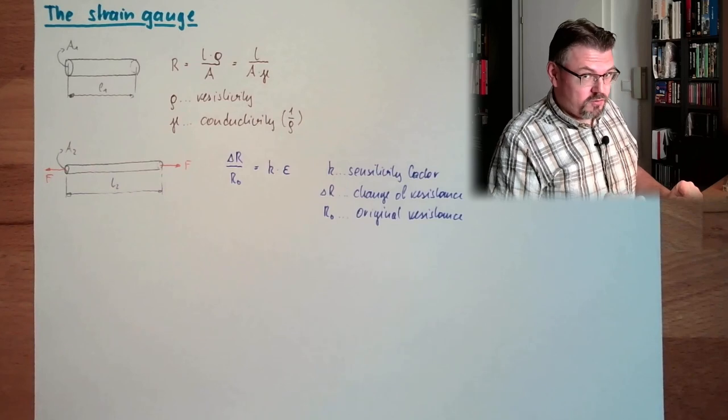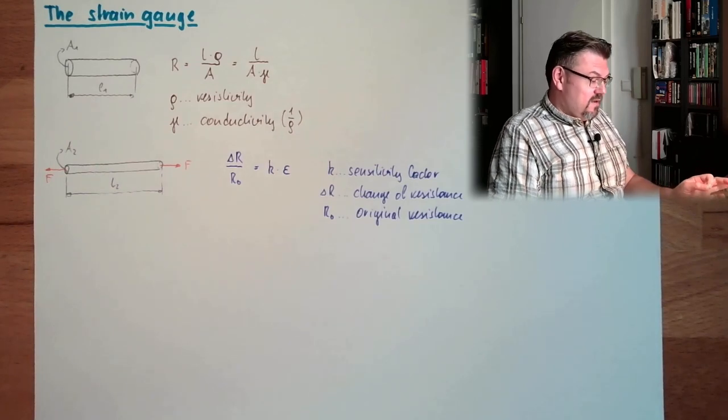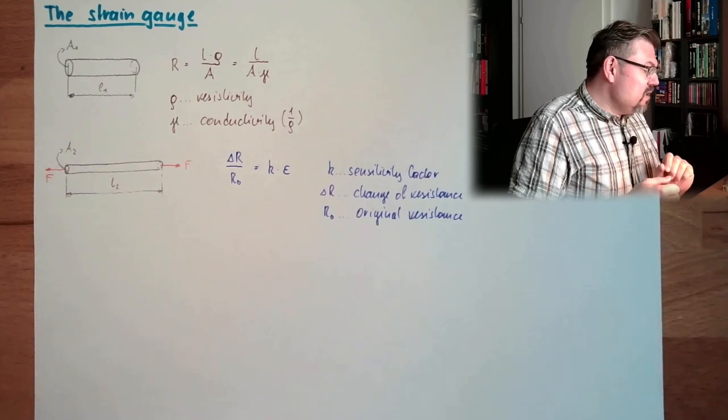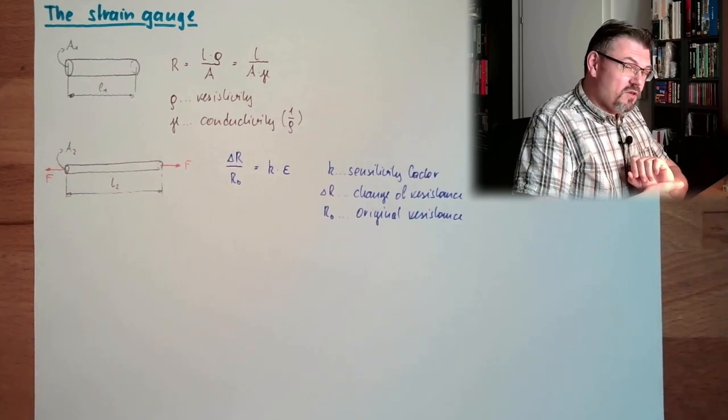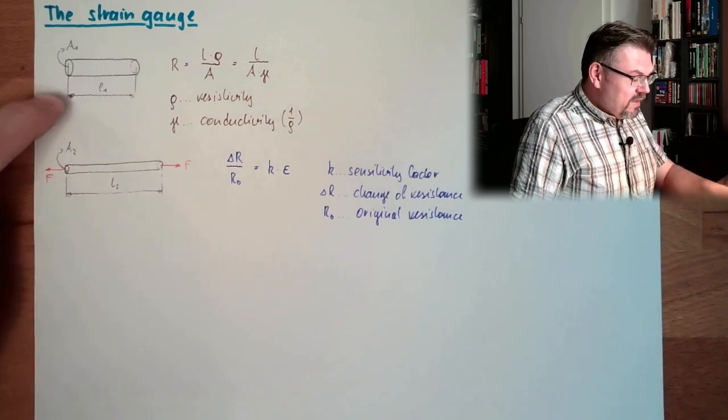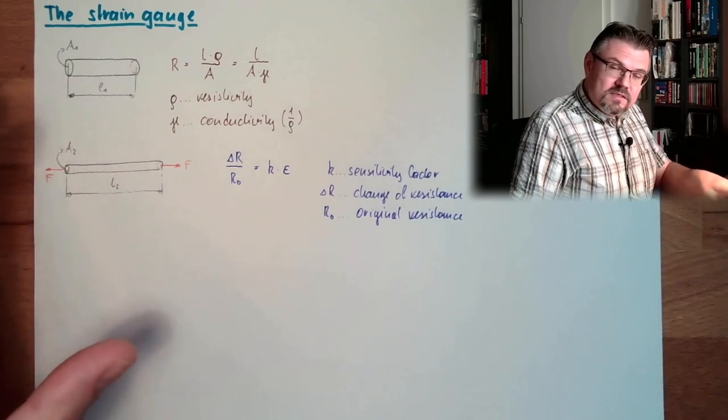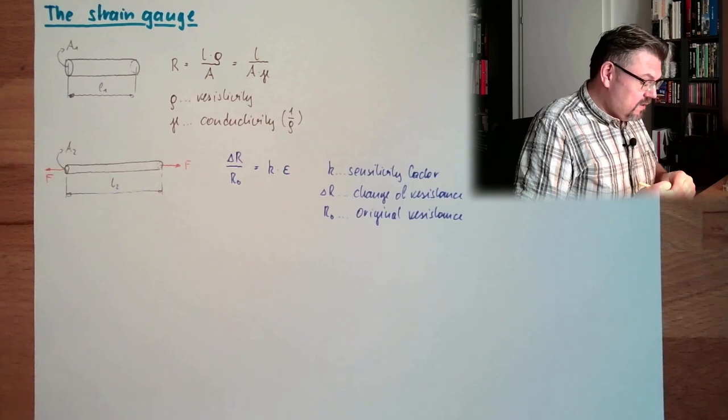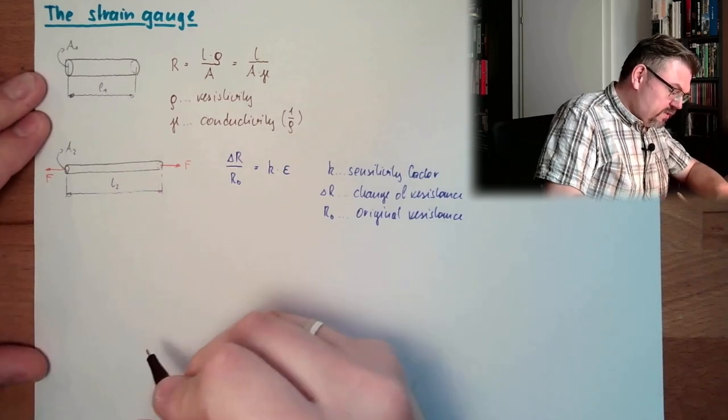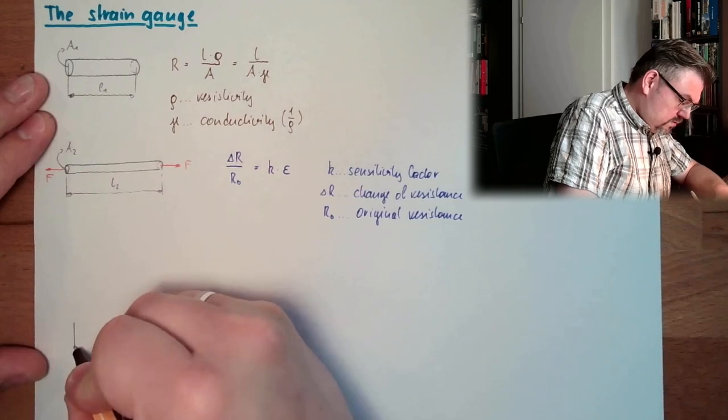Let's see how a strain gauge really looks like physically. So this is the principle. We are measuring the resistance. These resistance changes are usually very small. So we have to take care that there is a lot of resistance change.